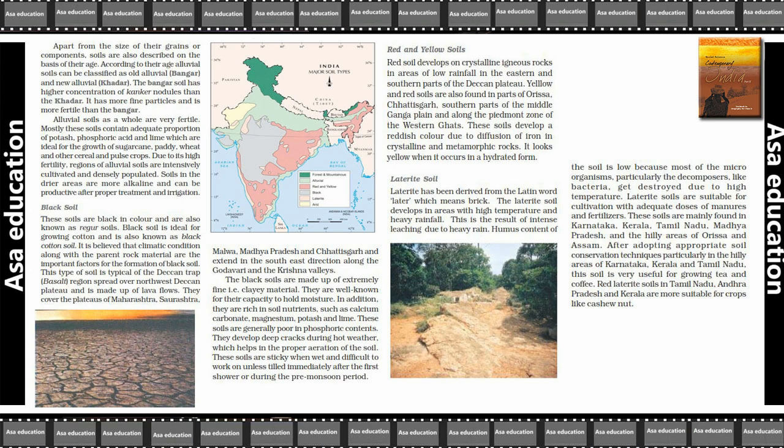Laterite soils are mainly found in Karnataka, Kerala, Tamil Nadu, Madhya Pradesh and the hilly areas of Odisha and Assam. After adopting appropriate soil conservation techniques, particularly in the hilly areas of Karnataka, Kerala and Tamil Nadu, this soil is very useful for growing tea and coffee.